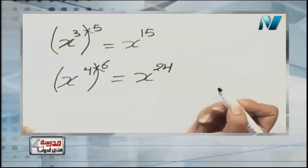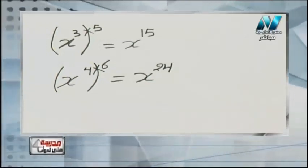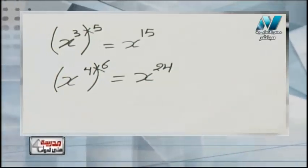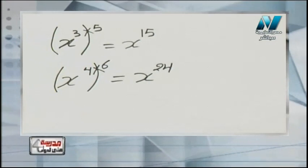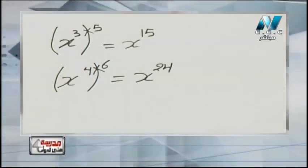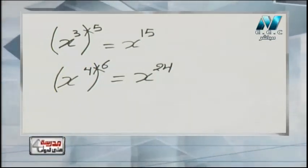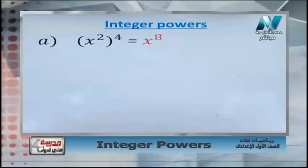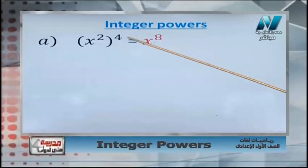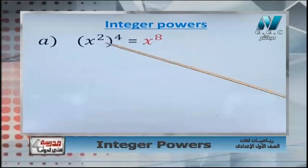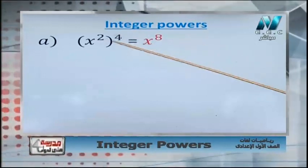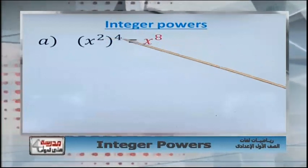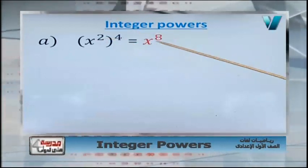Write down with me and see if you can answer it. First example: x power 2, all to the power 4. Power of the power — multiply them. 2 times 4 equals 8. So the answer is x power 8.